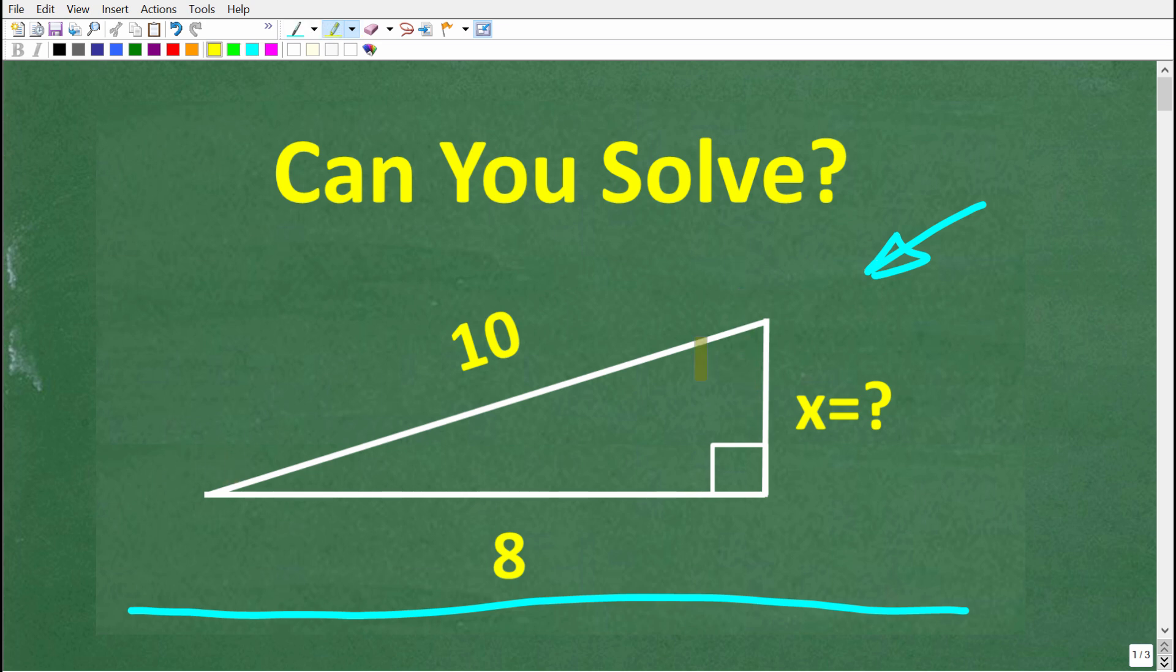So here is our triangle, and this side is 10, and this side is 8, and we're looking for the length of this missing side, which is x.